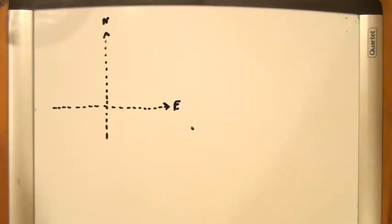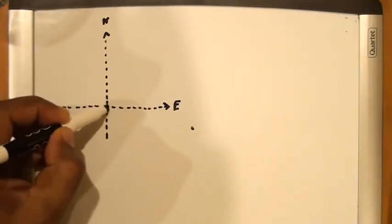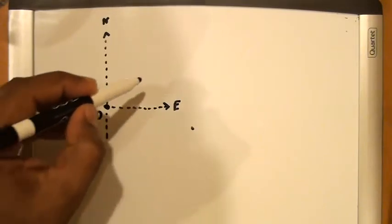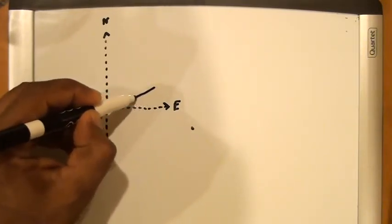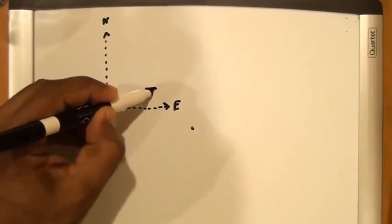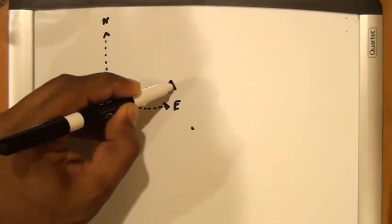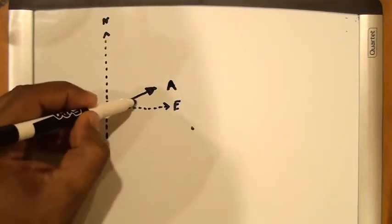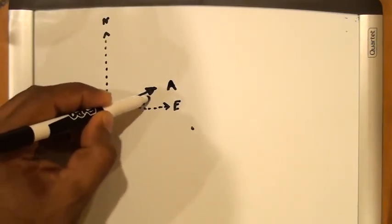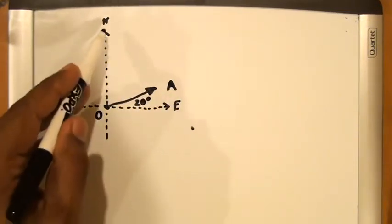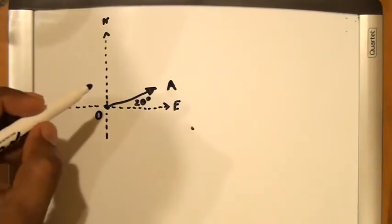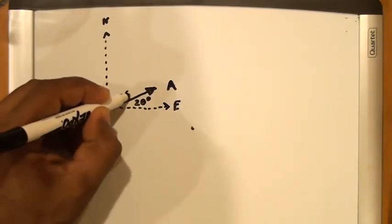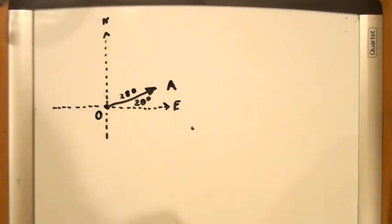Our next step is to draw the vectors that we want to add on our coordinate system. We are starting from the base camp and going to point A. Point A is 20 degrees north of east and we are flying 280 kilometers.